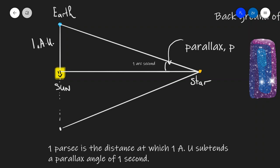So essentially in our parsec triangle, if this distance here is one astronomical unit, and this parallax angle is one arc second — or more precisely, 1/3600th of a degree — then this distance over here is going to be one parsec, written as pc to differentiate it from the parallax angle p.